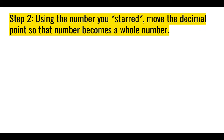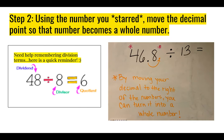Step two is: using the number you starred, move that decimal point so the number becomes a whole number. Looking at 46 and 8 tenths, I move the decimal point from between the 6 and the 8 to the other side of the 8 — I moved one whole space. The decimal point had to pass one number to turn 46 and 8 tenths into the whole number 468. Do this on your problem now and make sure your paper looks like the image here.